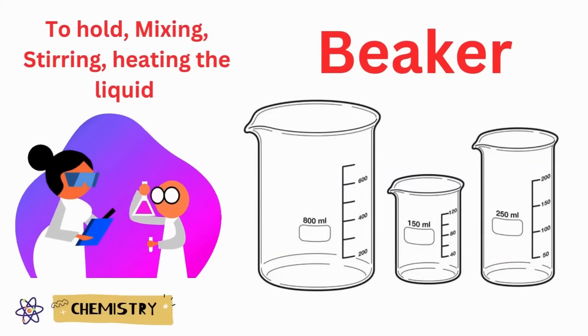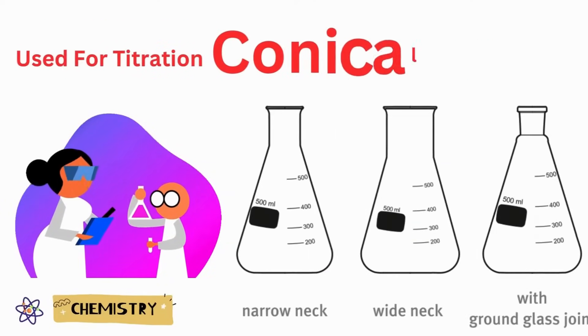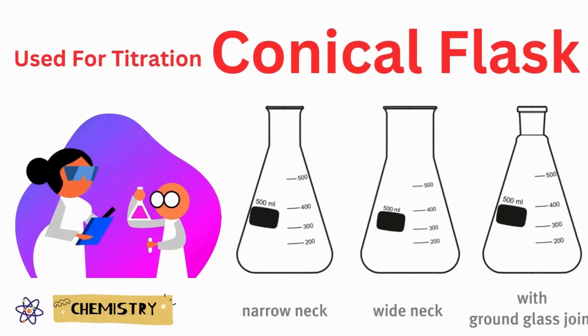Beaker. Beaker is used for holding, stirring and heating the liquid. Conical flask. It is used for titration.